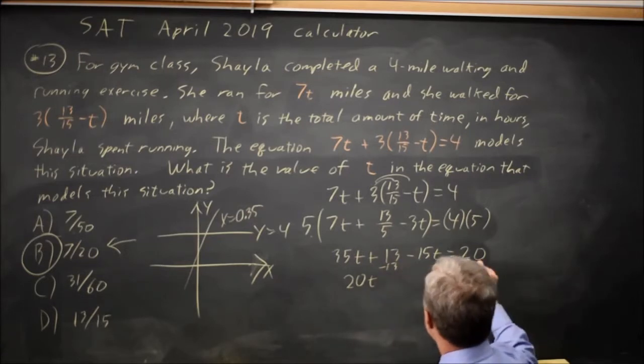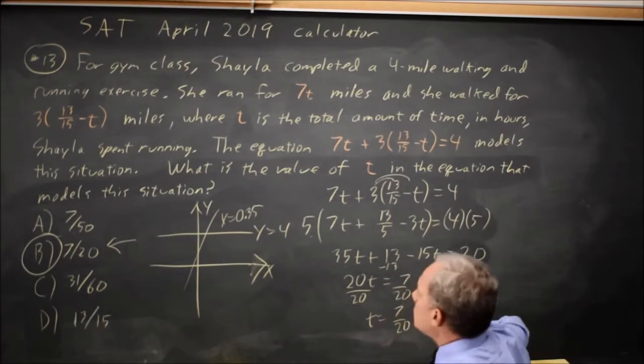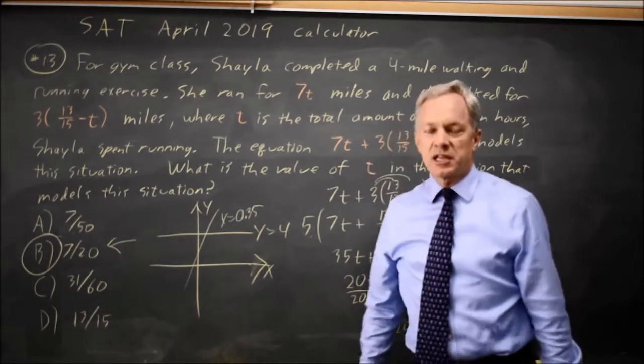If I subtract 13 from both sides, I get 20t equals 7, dividing by 20, t equals 7 over 20, which is the answer choice I found on the calculator.